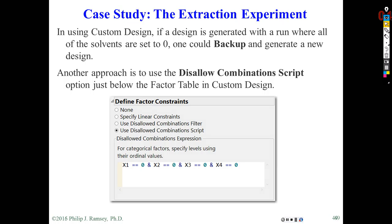Okay, and you'll get to see this later on in creating designs in JMP custom design, but there actually is beneath the factor table an option to create constraints. One of them is to actually disallow combinations that you do not want. So here I've put in that any combination where all four solvents are zero is to be disallowed. So JMP will not allow that combination.